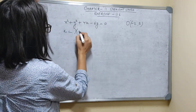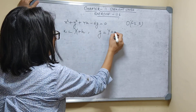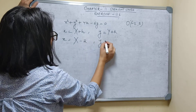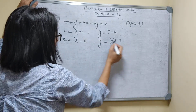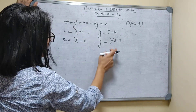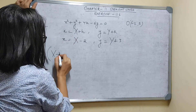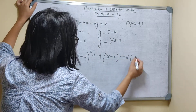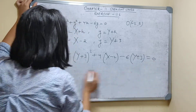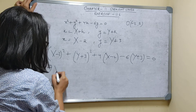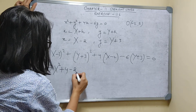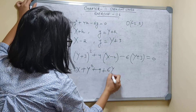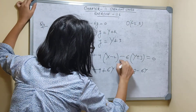X = capital X + H, where H = -2, so X = capital X - 2. Y = capital Y + K, where K = 3, so Y = capital Y + 3. Substituting: (X - 2)² + (Y + 3)² + 4(X - 2) - 6(Y + 3) = 0. Expanding: X² + 4 - 4X + Y² + 9 + 6Y + 4X - 8 - 6Y - 18 = 0.